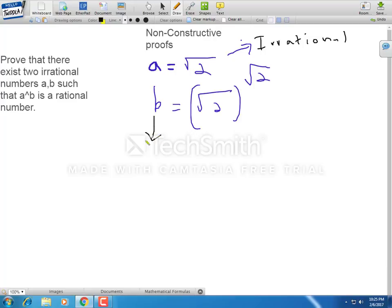But as for b, this can be one of two things. Case 1: it's irrational. Case 2: it's rational.